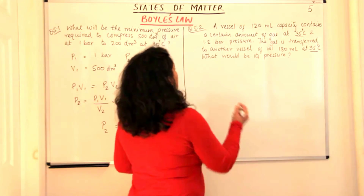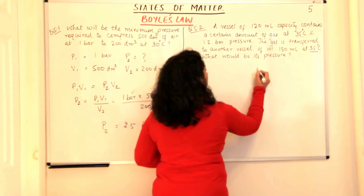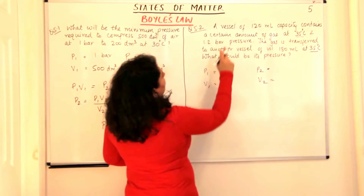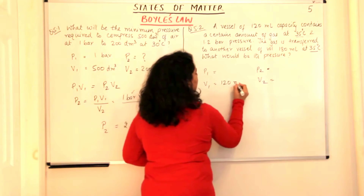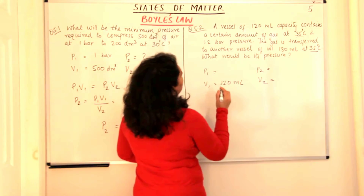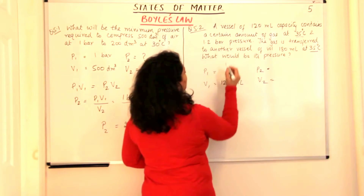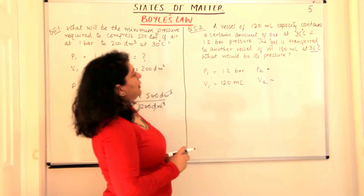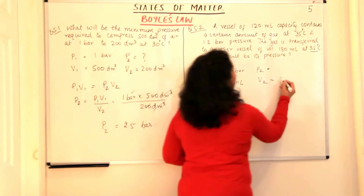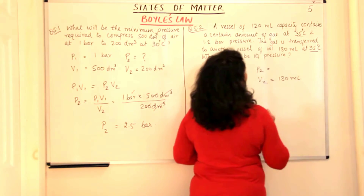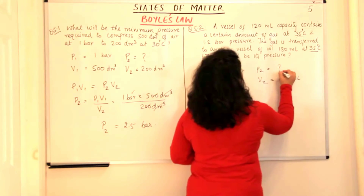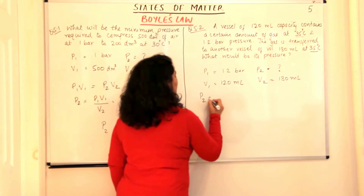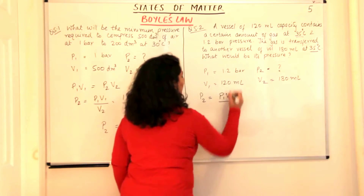So now what would be its pressure? Let's identify P1, V1, P2 and V2. P1 is 1.2 bar, V1 is 120 ml. The gas is transferred to another vessel — V2 is 180 ml — and the final pressure is required. According to P1 V1 = P2 V2, rearranging gives P2 = P1 V1 / V2.